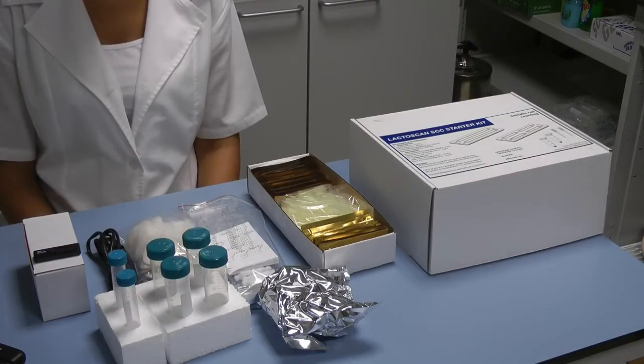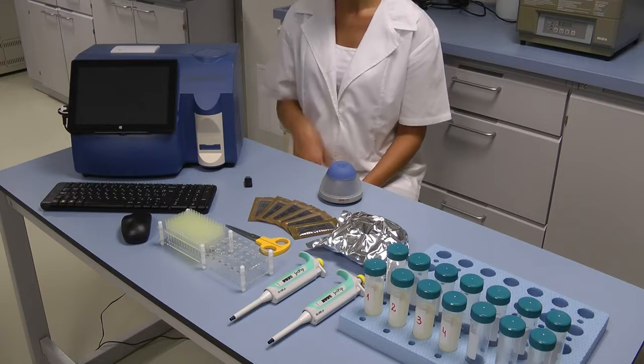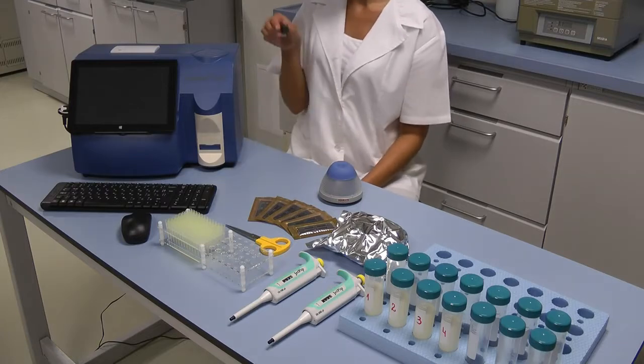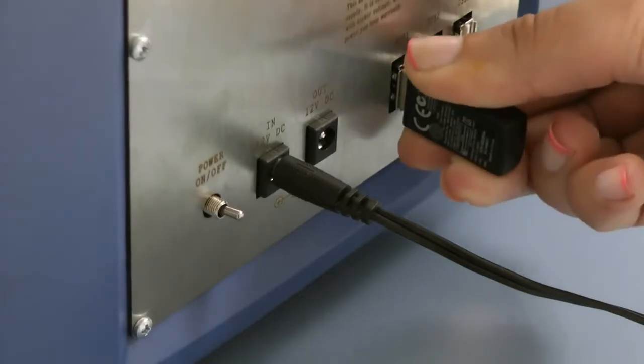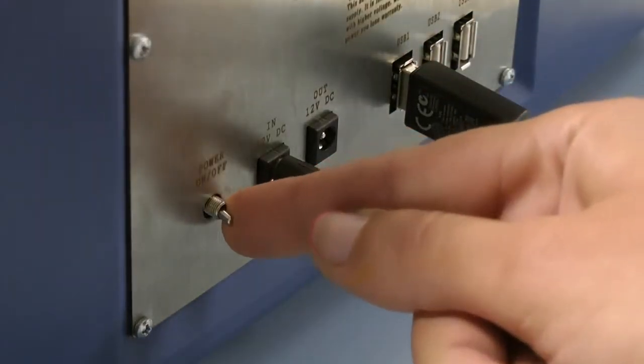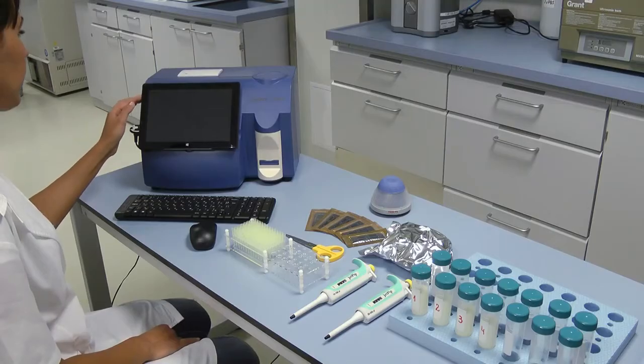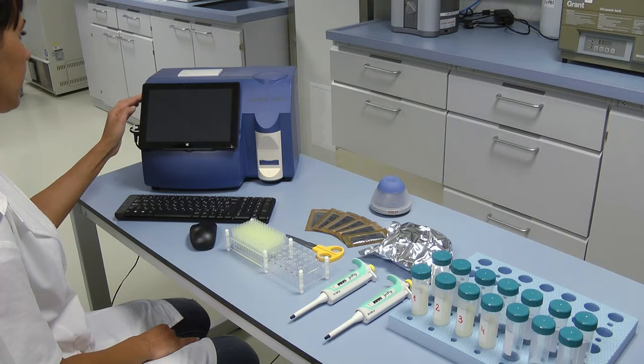When you have done this, the first thing to do is to put the USB flash drive in the USB port at the back side of the LactoScan in order to connect it to the device along with the wireless keyboard, and then press the power on button next to it in order to switch on the device.